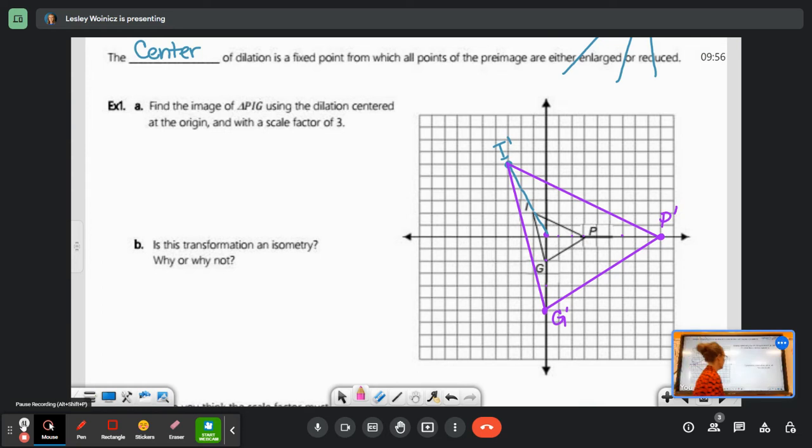So the coordinates. Let's start with P prime. P prime, that would be 9, 0. I prime, that is negative 3, positive 6. And G prime, that is 0, negative 6.